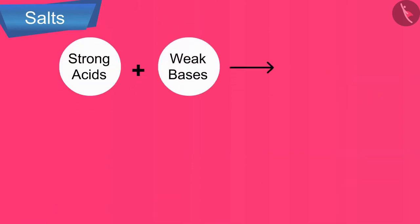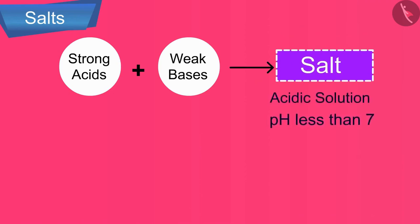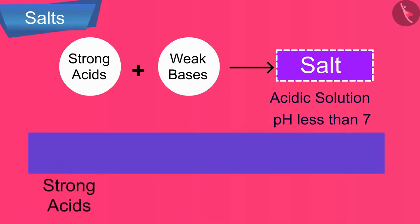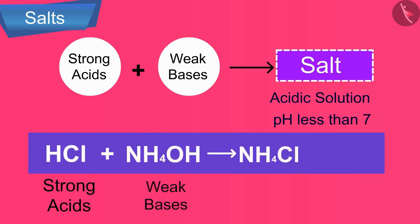Secondly, the salts of strong acids and weak bases give acidic solution, pH less than 7. Let us understand this with the help of an example. Ammonium chloride is formed by a strong acid, hydrochloric acid, and a weak base, ammonium hydroxide. And so, the salt obtained is acidic in nature.